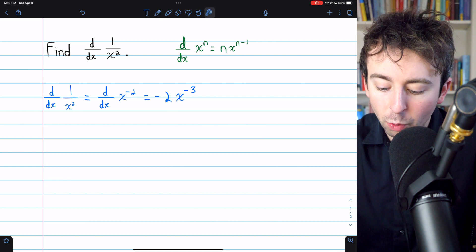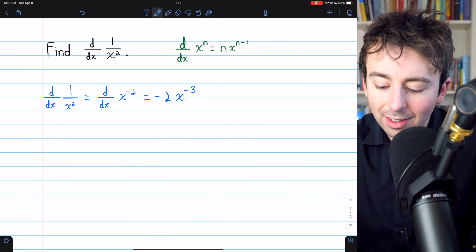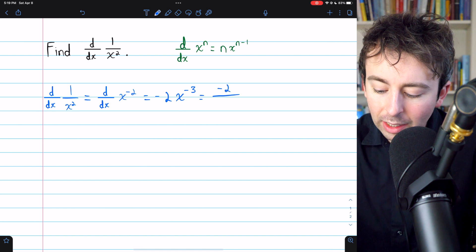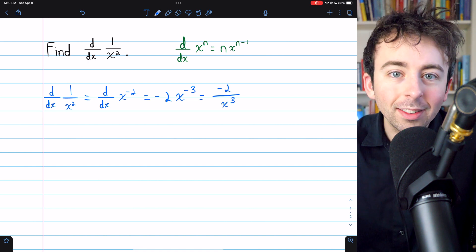And there is our derivative. Negative 2x to the negative third, or if you prefer, negative 2 divided by x cubed.